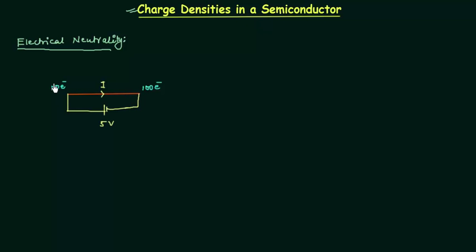But if electrical neutrality is not followed, what will happen? Let's say 100 electrons are entering this copper wire but only 50 electrons are leaving, so 50 electrons remain in this copper wire, and because of these 50 electrons, this copper wire becomes charged.